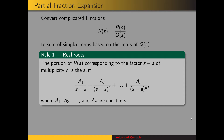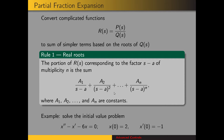A tool we'll use whenever finding inverse Laplace transforms is partial fraction expansion. It allows us to convert a complicated function into a sum of simpler functions that we can find in the Laplace transform table. For components having real roots, the portion of the fraction corresponding to the factor (s−a) of multiplicity n is the sum a1/(s−a) + a2/(s−a)² up to an/(s−a)^n, where these a values are constants we need to determine. For example, we want to solve the initial value problem: x'' − x' − 6x = 0 with initial conditions x(0) = 2 and x'(0) = −1.